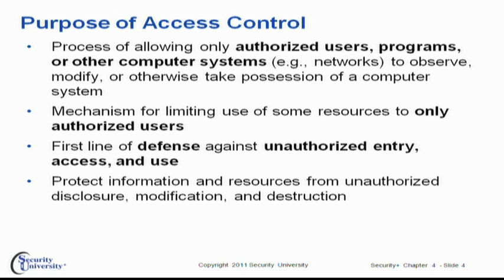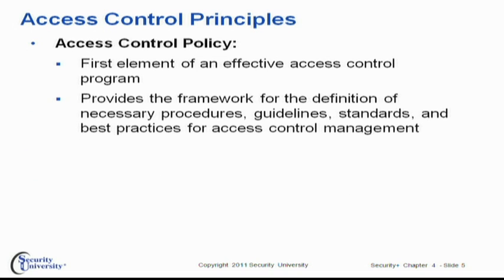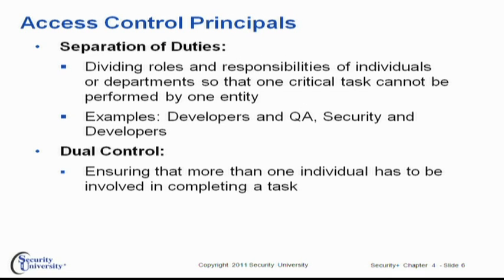Remember, in Chapter 1 we started the course with the security triad. Confidentiality — the enemy of confidentiality is unauthorized disclosure. Integrity — the enemy of integrity is unauthorized modification. And the enemy of availability is destruction or other denial of service. We start our access control deployment with a policy. We have to figure out what our goals are in determining who can get to what resources within our network and our computing environment. One of the hot buttons with IT auditors throughout the world, and also financial auditors, is separation of duties — you divide the roles and responsibilities of different individuals so that one task is not done from start to finish by one individual.